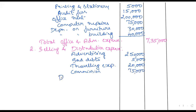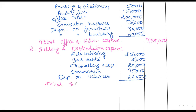One depreciation which is left out — depreciation on vehicles — we are taking here under selling and distribution. The amount is 20,000. Total selling and distribution expense is 3,70,000.